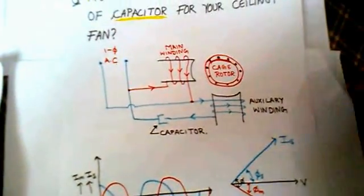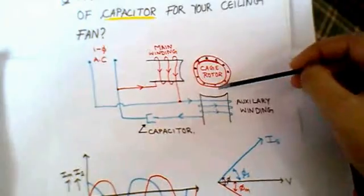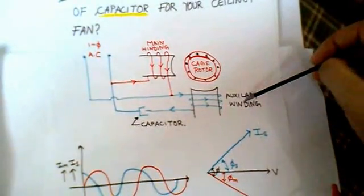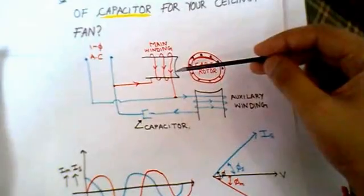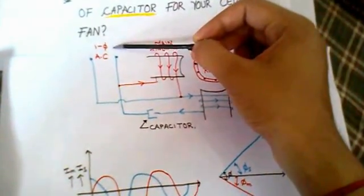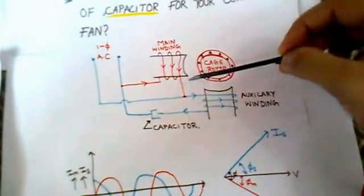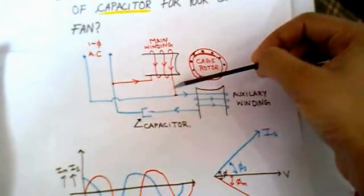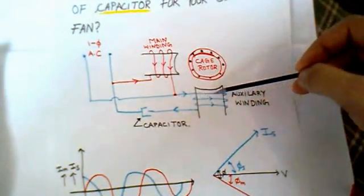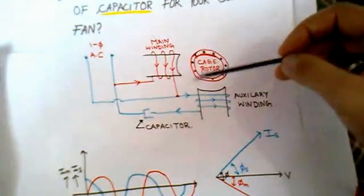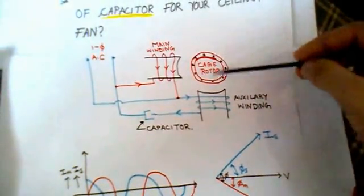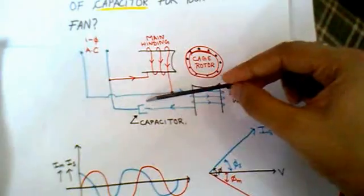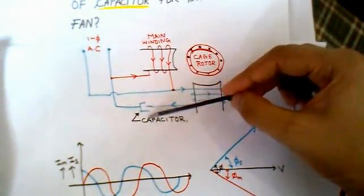To calculate the value of the capacitor, I have drawn a diagram. This is a cage rotor and there are two windings — the first one is the main winding and the second one is the auxiliary winding. We have done two windings to split the phase, that is to convert this single phase AC supply into two phase AC supply. The condition is that the current in the auxiliary winding must be 90 degrees displaced compared to the current in the main winding, and only then we will be able to create a rotating magnetic field which will produce a torque during starting. Here is the capacitor that will be attached, and in this video we will be calculating its value.